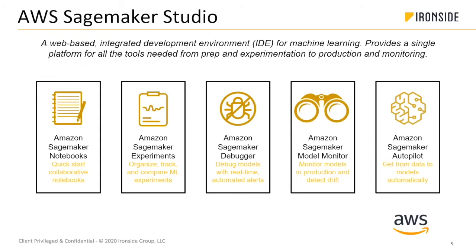SageMaker Studio is AWS's machine learning platform. It's a web-based integrated development environment — an IDE. The goal is to provide an end-to-end solution. Before they released this six months ago, they had SageMaker, which is essentially Jupyter Notebooks that can run off AWS engines, and that was the primary machine learning tool. They really wanted to provide something more with end-to-end functionality that can accelerate the data scientist's work.